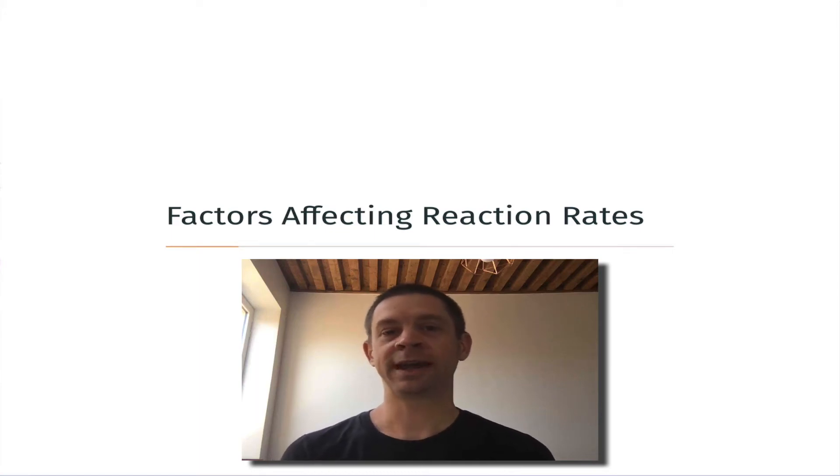In this video, we're going to talk about chemical properties and experimental variables that can affect reaction rates. Our goal here is to be able to make predictions about whether reactions will speed up or slow down as, for example, experimental conditions change or we change the chemical properties or makeup of the reaction mixture.